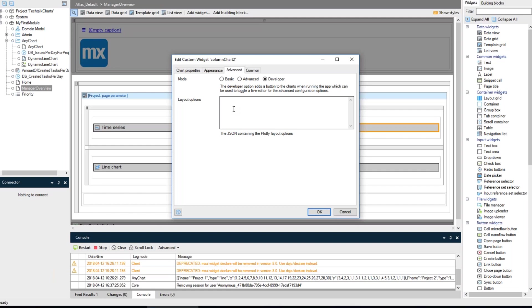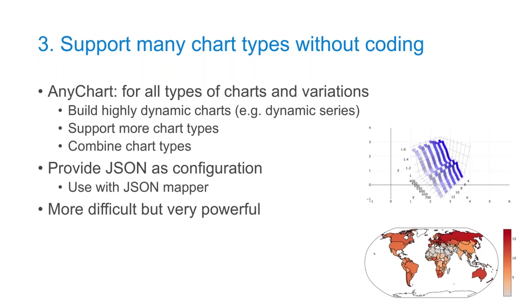The widget has default settings, and with the JSON configuration you can extend those for pixel-perfect design. Last but not least, the Any Chart widget — we wanted to support many chart types and very dynamic charts without coding, while keeping the default charts simple. Any Chart receives a JSON configuration as input and generates charts based on it. It's a bit more complex because you need to generate the JSON, but it's very powerful and much faster than coding. It supports 3D charts, map charts, and many more possibilities without coding.